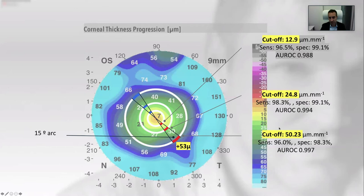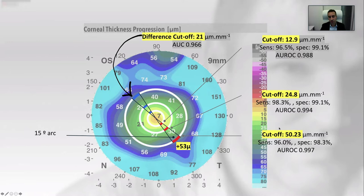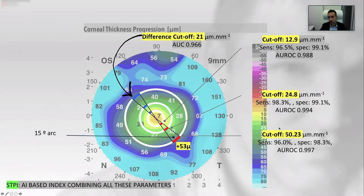Looking at the area opposite to the cone, the cutoff is 21 microns per millimeter when examining the difference between values from either side of the hemisector. An AI-based index combining all these parameters was developed, which is sensitive and specific down to 99%.